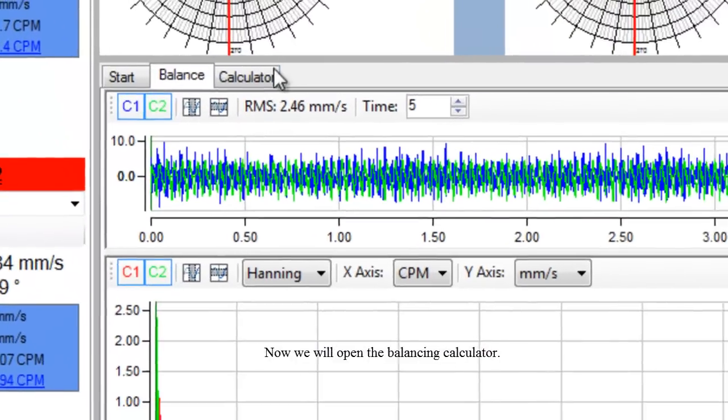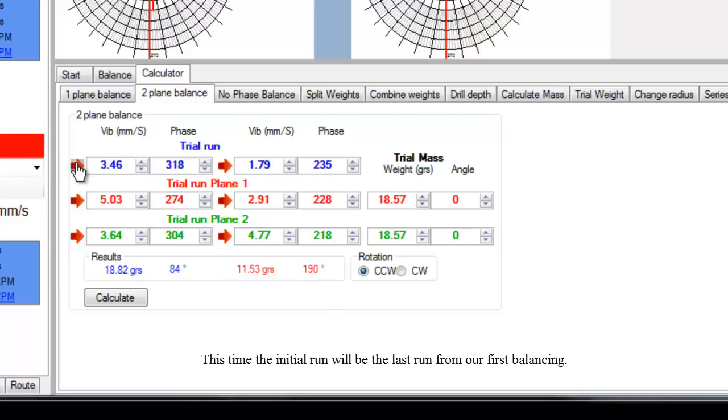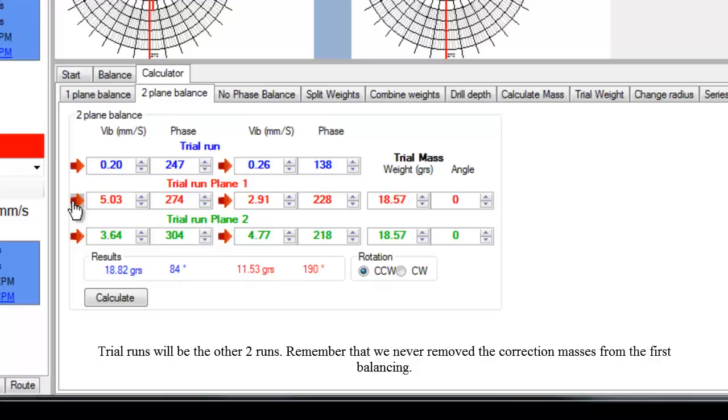Now we will open the balancing calculator. Select the 2-plane balance tab. This time the initial run will be the last run from our first balancing. Trial runs will be the other 2 runs. Remember that we never removed the correction masses from the first balancing.